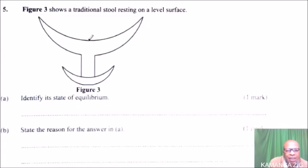Identify its state of equilibrium. Looking at this, the center of gravity, this is where we have the center of gravity, COG. So the kind of equilibrium here is a stable equilibrium.